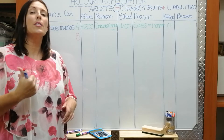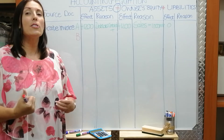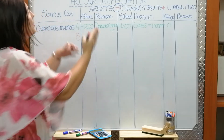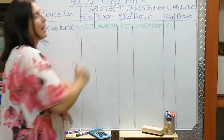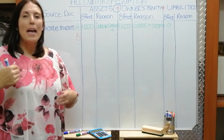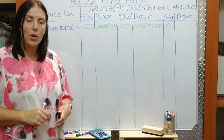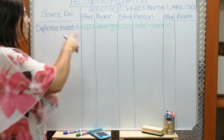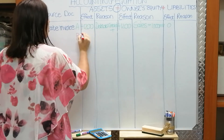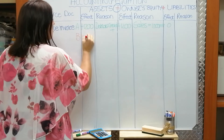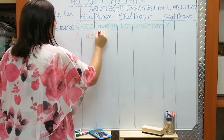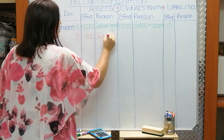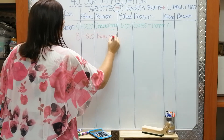So what did we sell? We sold trading stock. Trading stock is what type of account? An asset. So I move to my asset element. What happens if I give the client the trading stock? The stock levels on my shelves decrease. So under assets, I'm working with the cost of sales amount. I write minus 800, and my reason is trading stock decreased.